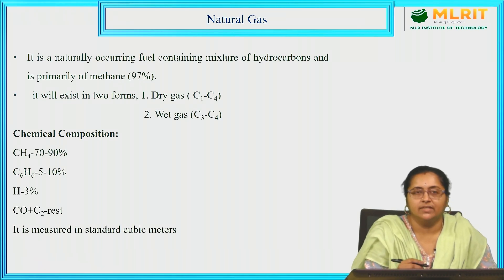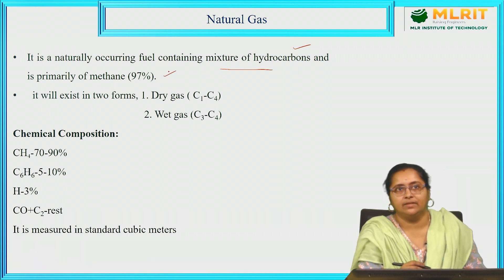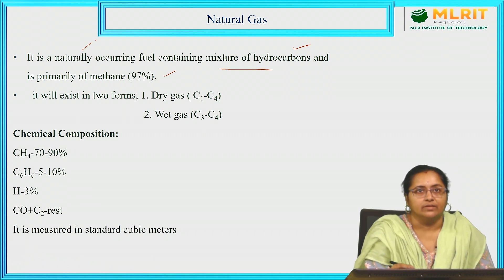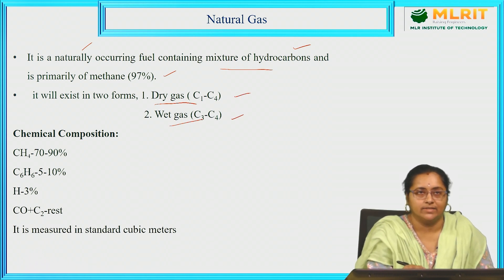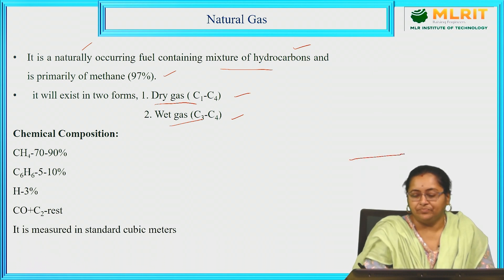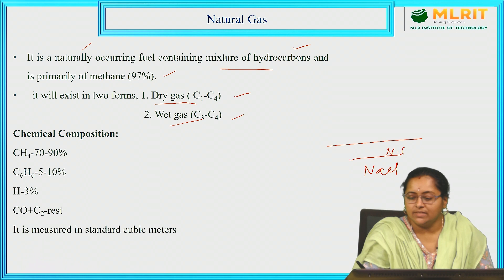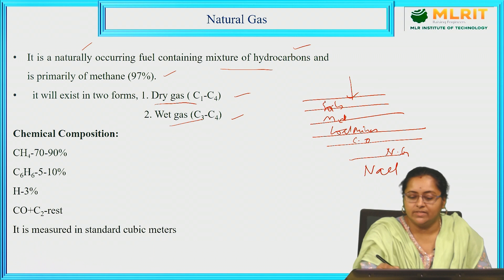Let us start with the first naturally existing gaseous fuel, that is natural gas. It is a naturally occurring fuel that contains a mixture of hydrocarbons, and most of it is methane — 97 percent. It is present in the earth's core. Basing on its occurrence there, it can exist in two different forms: dry gas and wet gas. The last layer of the earth's core is brine solution — NaCl. Upon that we have natural gas, then crude oil, then coal mines, then mineral deposits, and then soil.